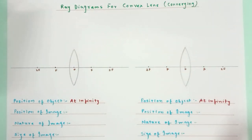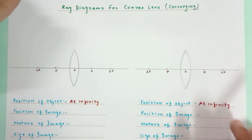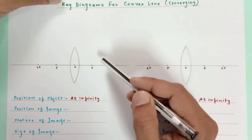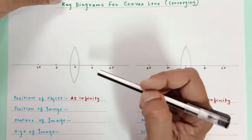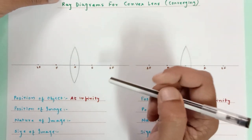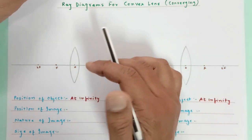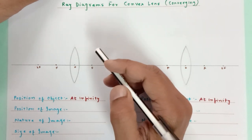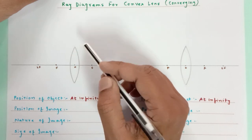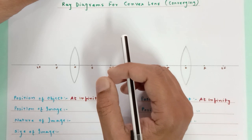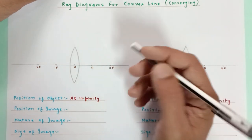Hello there, scientific brilliant people. Today we will be discussing ray diagrams for convex lenses. We know that the convex lens is a converging lens, and I will give you the method to draw the ray diagrams for 7 different cases. Before you start viewing this lecture, I suggest that you also view my lectures on rules for image formation and how to draw convex lenses. The links are already given in the description.